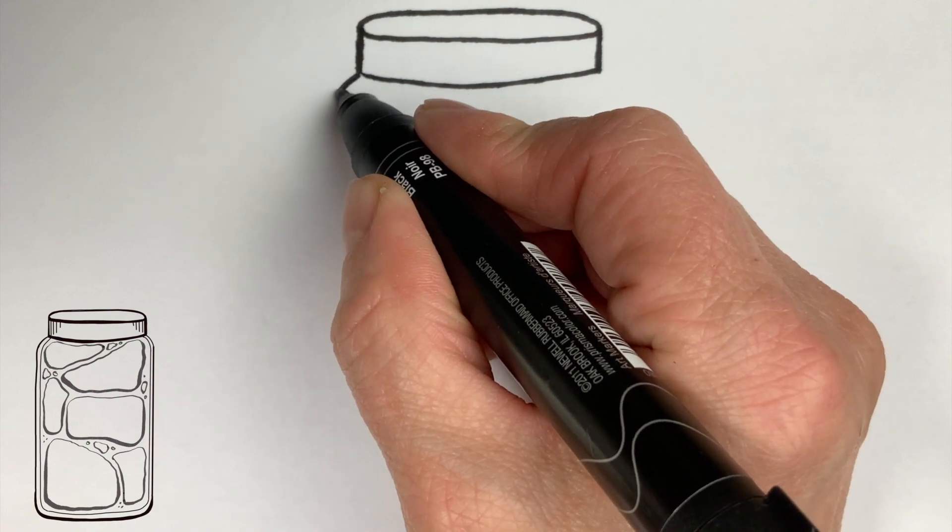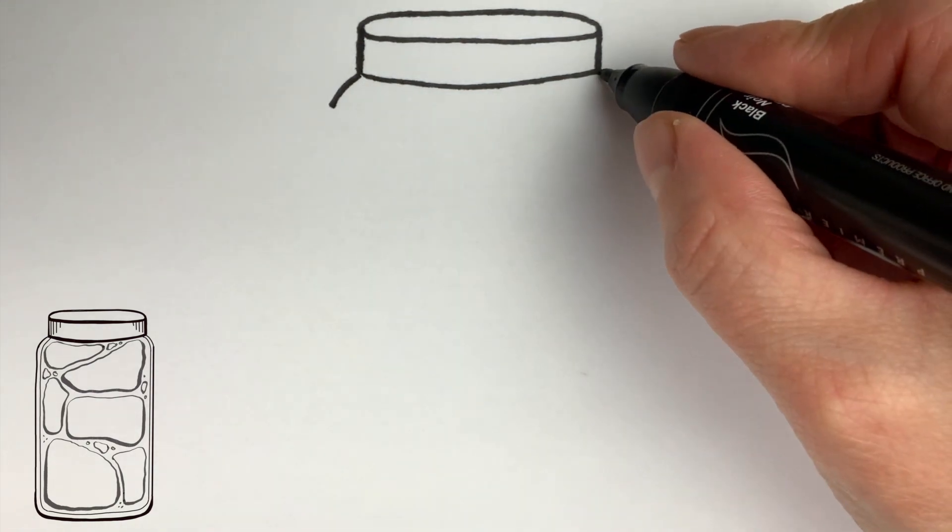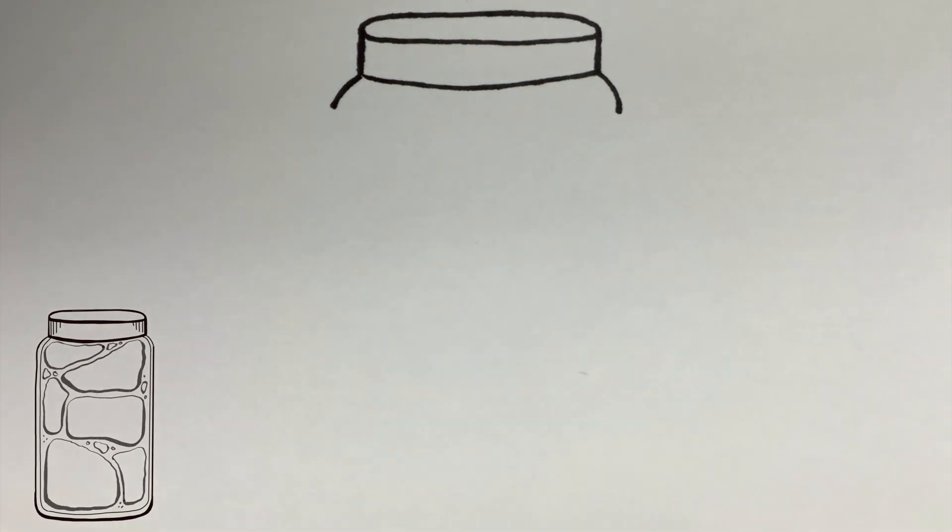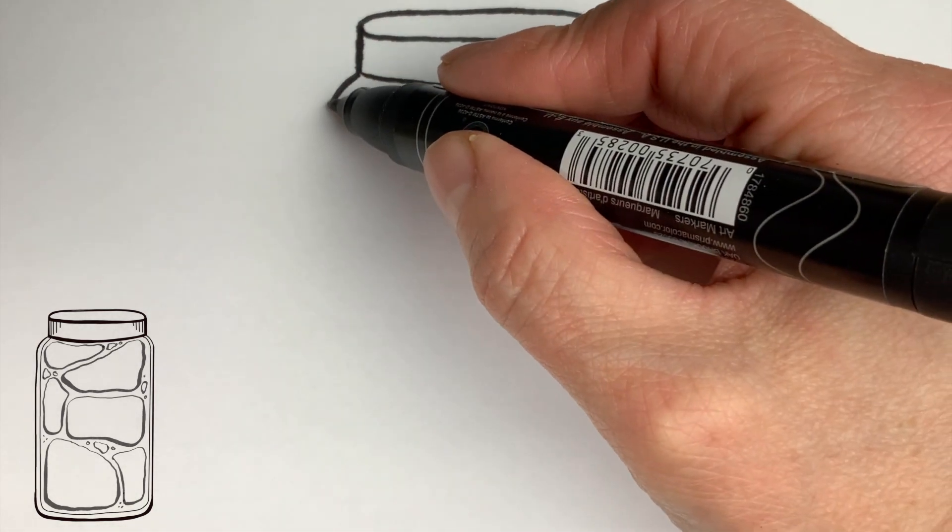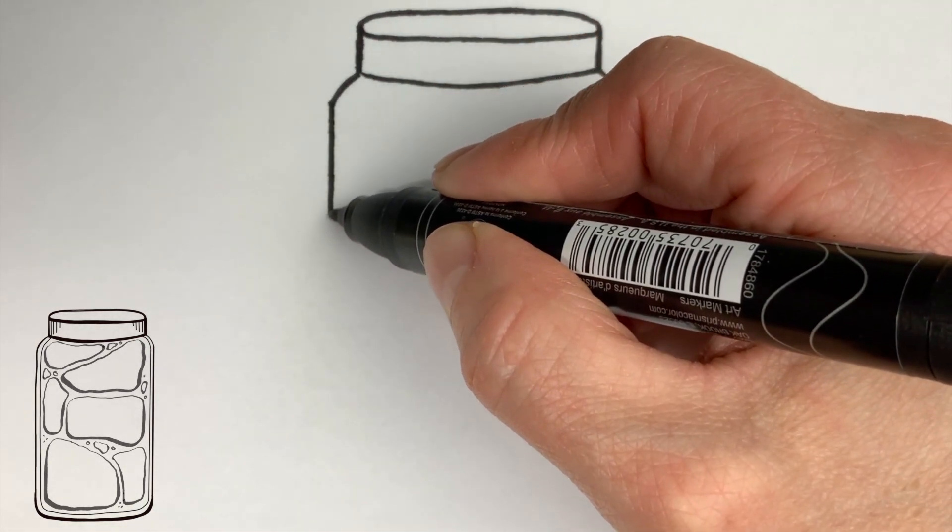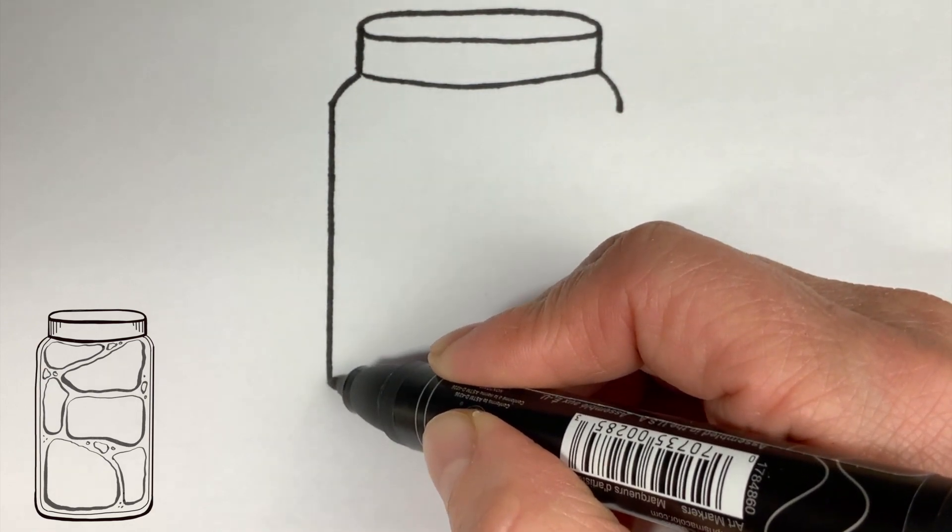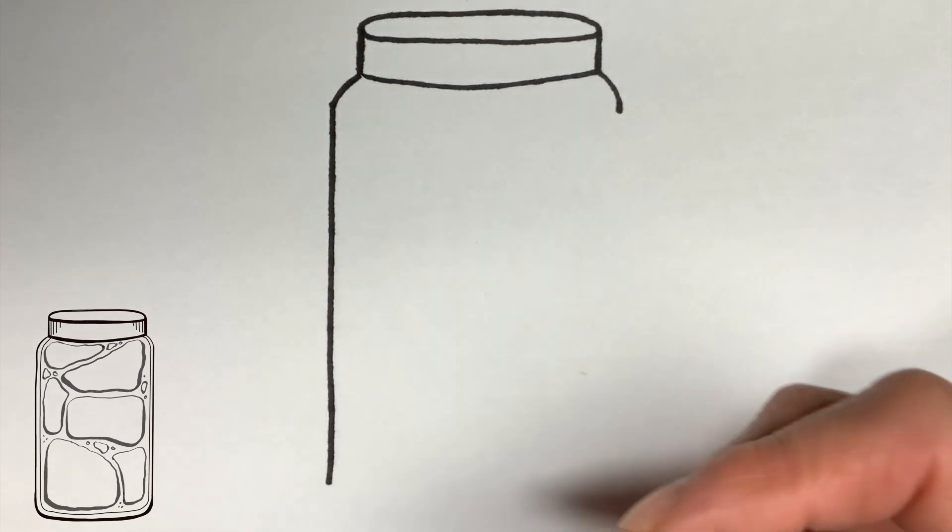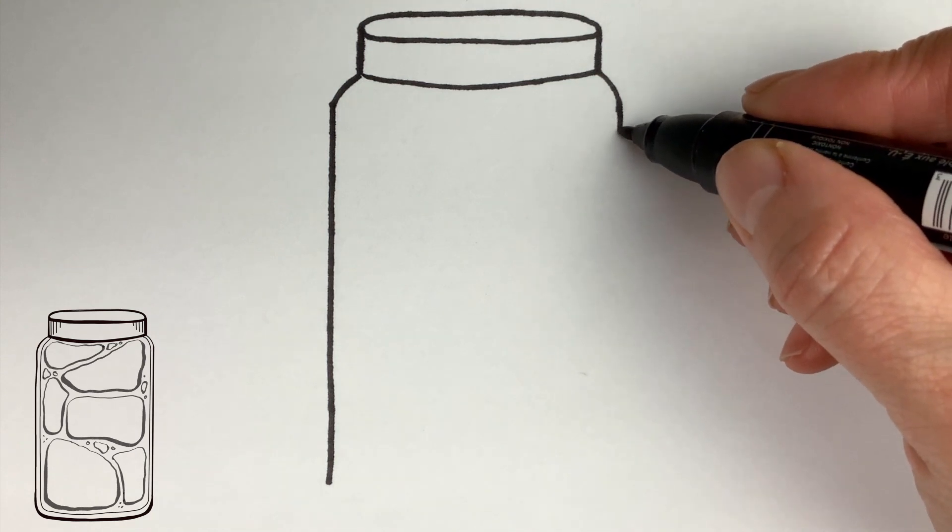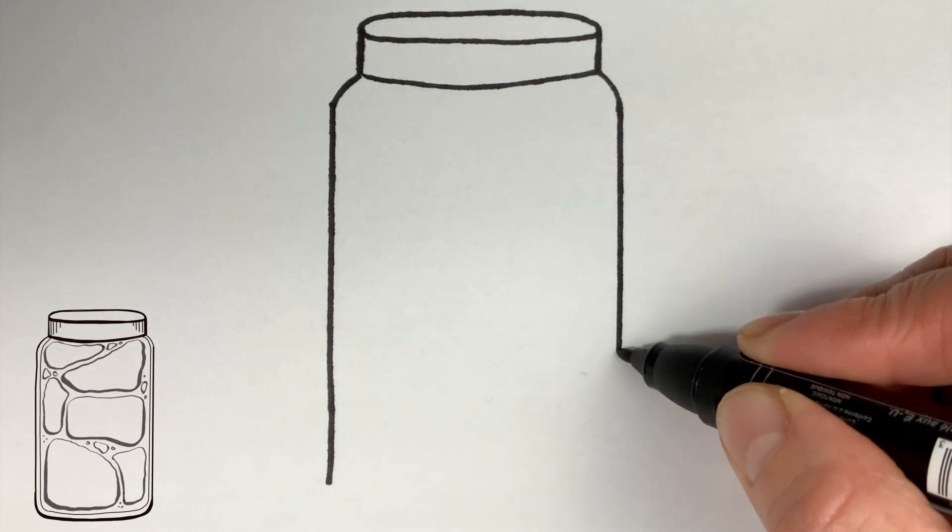And now the sides of your jar. I did the little rounded of the top and then we're gonna make the vertical lines down and you could have made your jar wider if you wanted to. Mine's kind of a mason jar, you could have done a pickle jar, it's wider.